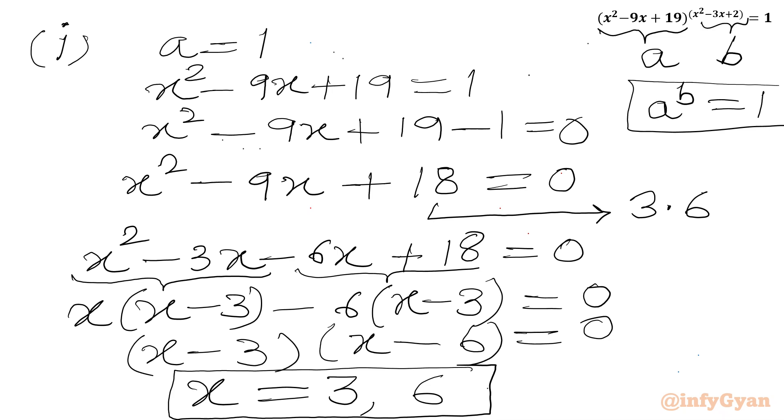Now I will consider case number 2. Here power is 0. So I will write power is 0, but base can't be 0. This is our base a and power is b. Let's put power equal to 0. x square minus 3x plus 2 equal to 0.